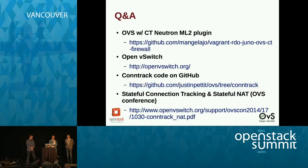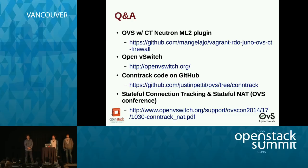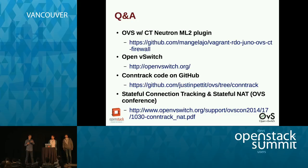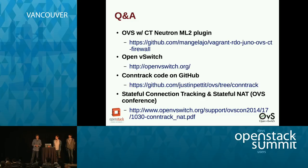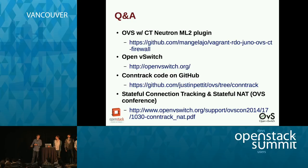Question: since OVS is stateless, where are the IP tables rules stored? There are no IP tables rules. The rules are written in the OpenFlow flow table — a flow which matches and enforces based on IP address and port. There's more detail about how the connection tracker works in our previous presentation, which is also online — if you go to the main OVS webpage, you can find links to conference videos.